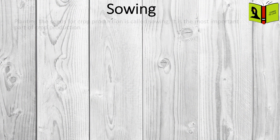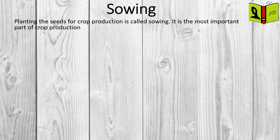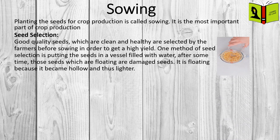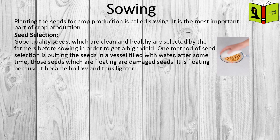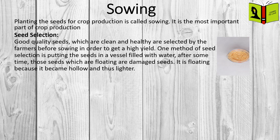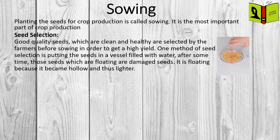Sowing. Planting the seeds for crop production is called sowing. It is the most important part of crop production. Seed selection. Good quality seeds, which are clean and healthy, are selected by the farmers before sowing, in order to get a high yield. One method of seed selection is putting the seeds in a vessel filled with water. After some time, those seeds which are floating are damaged seeds, because they became hollow and thus lighter.